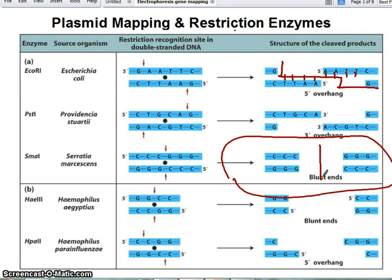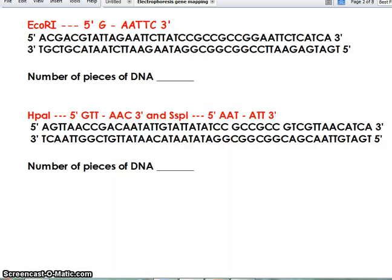Blunt ends are still useful for cutting DNA at specific sites — for example, to do DNA fingerprinting. It's still going to be very specific, only cutting the DNA when it finds a specific sequence. This was on a worksheet, and I could give you something like this on a test — asking you how many pieces of DNA you end up with and how many cuts the enzyme makes.